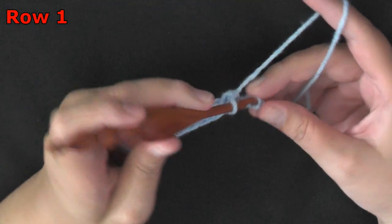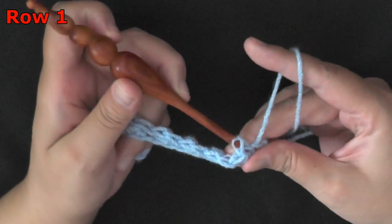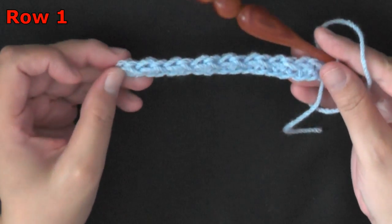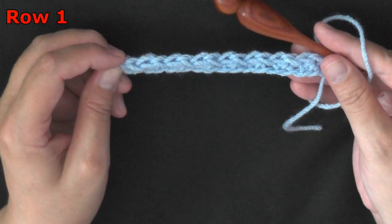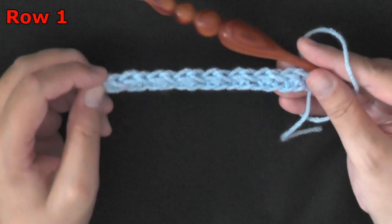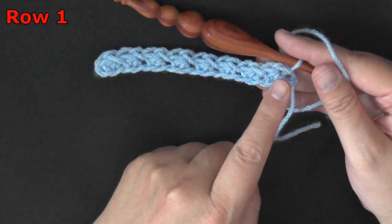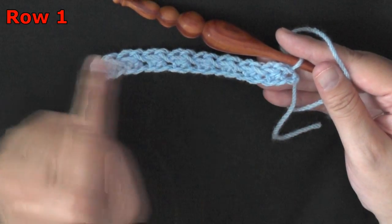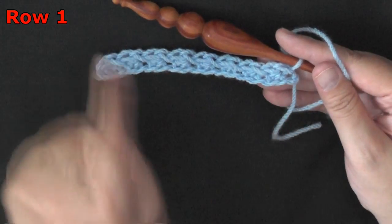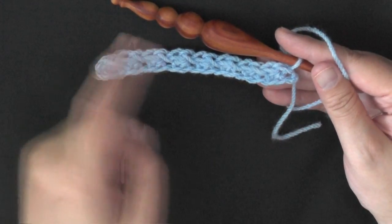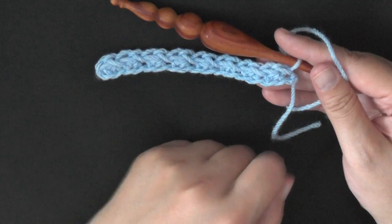I'm just ending my row here with a slip stitch. Whatever your first stitch is, which remember our very first stitch was a half double crochet, means that we'll end with the other stitch, which is a slip stitch. So you should begin and end with different stitches. If you started with a slip stitch, then your very last stitch will be half double crochet.